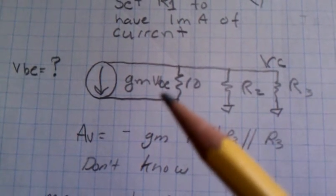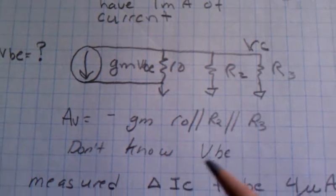However, since we don't know VBE, this gain equation is a little hard to use.